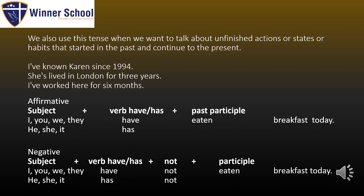We also use this tense when we want to talk about unfinished actions, states, or habits that started in the past and continue to the present. Examples: I have known Karen since 1994. She has lived in London for three years. I worked here for six months.